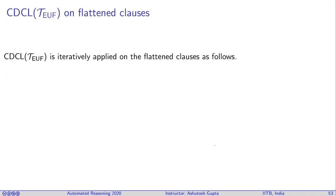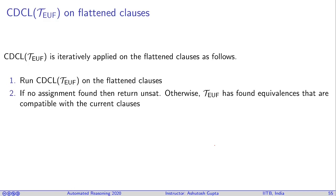So theory of equality is iteratively applied on the flattened clauses as follows. Run CDCL(T_EUF) on the flattened clauses. If no assignment found, then return unsat and you have unsatisfiability. And so in this process, if you don't have unsatisfiability, you will have equivalence of terms. You have introduced several new terms like U, U prime, et cetera. If equality permits, you may have equivalence classes among them. And we will represent these equivalence classes like this.